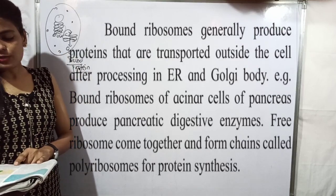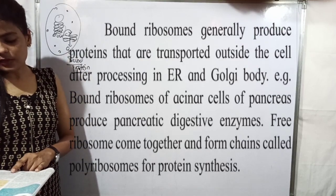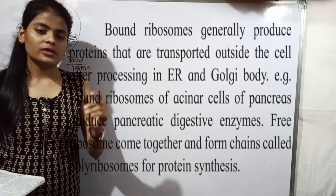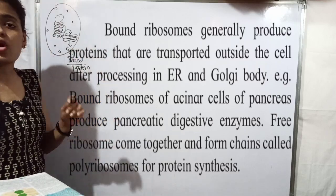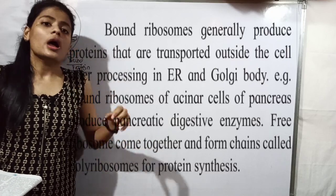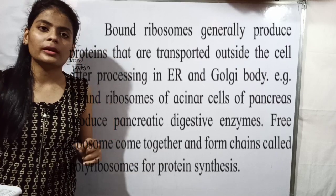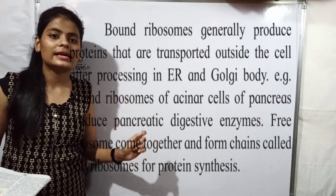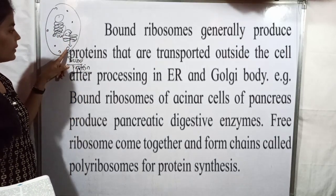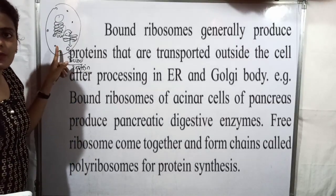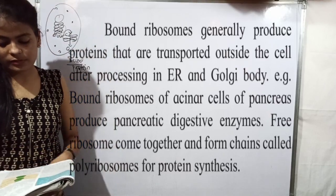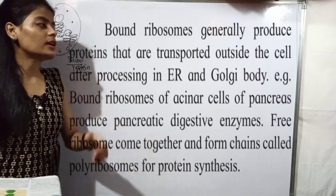An example of bound ribosome function: the bound ribosomes of acinar cells of the pancreas produce pancreatic digestive enzymes. For instance, the acinar cells in the pancreas produce insulin protein using bound ribosomes. So insulin is an example of a protein made by bound ribosomes, which is then modified and released.